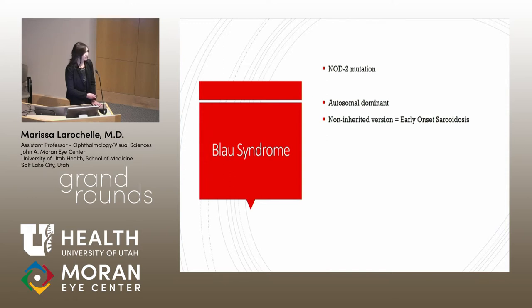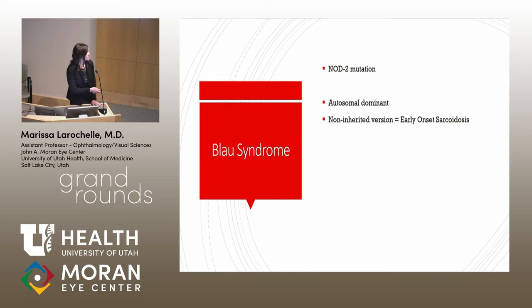Regarding penetrance: it's unclear if it is 100%. This patient may actually have early-onset sarcoid rather than Blau — he had a biopsy and the gene mutation, but no family history. So technically, this may be early-onset sarcoid rather than Blau.